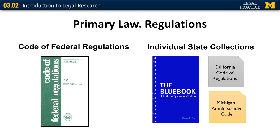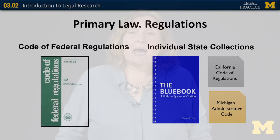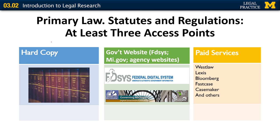Regulations are the rules created by executive branch agencies to help them implement statutes. Federal regulations are collected in the Code of Federal Regulations, or the CFR, and like the United States Code, it's a multi-volume collection arranged by subject matter. Each state will have its own collection of its agency regulations, and the Blue Book can tell you the name of each state's collection of regulations.